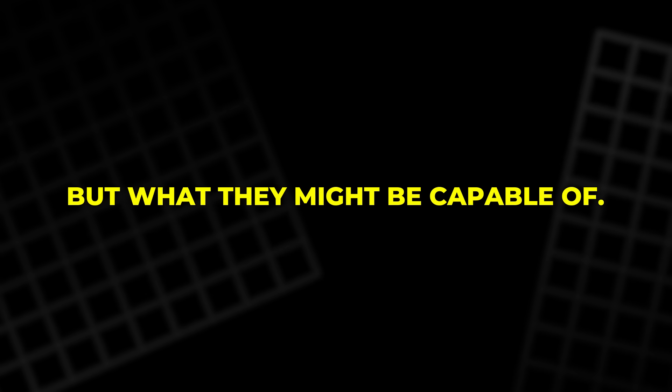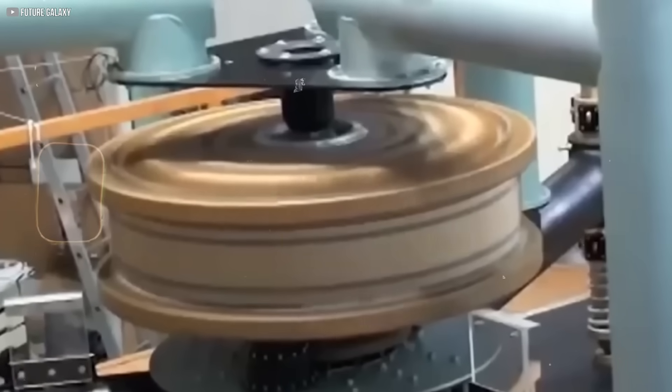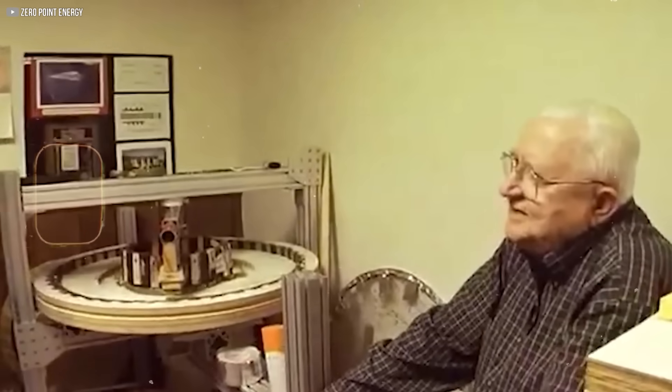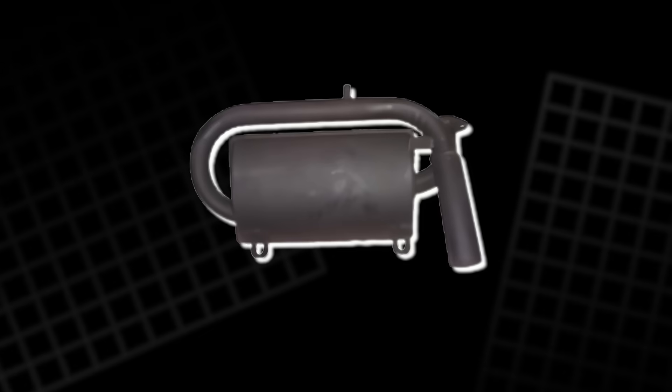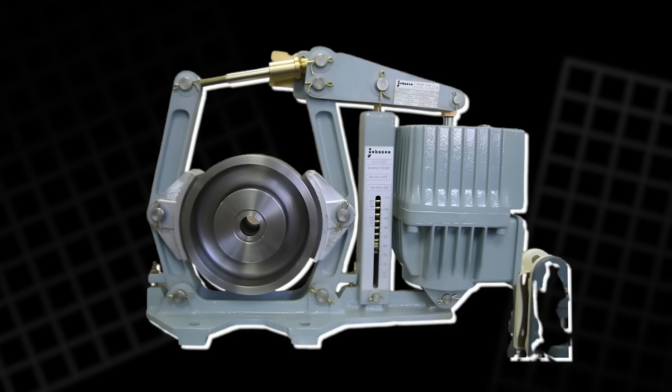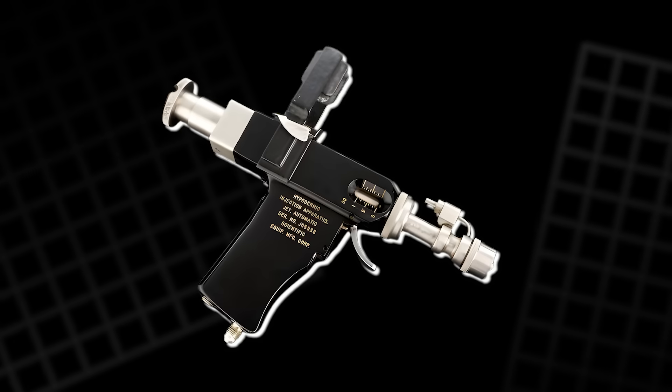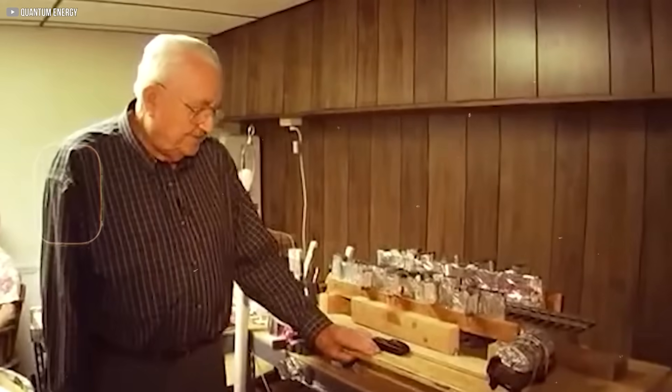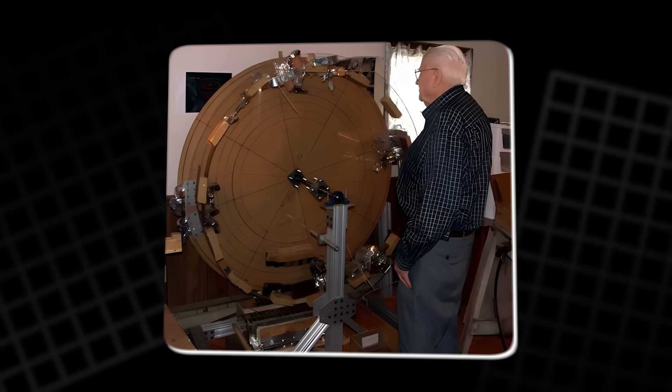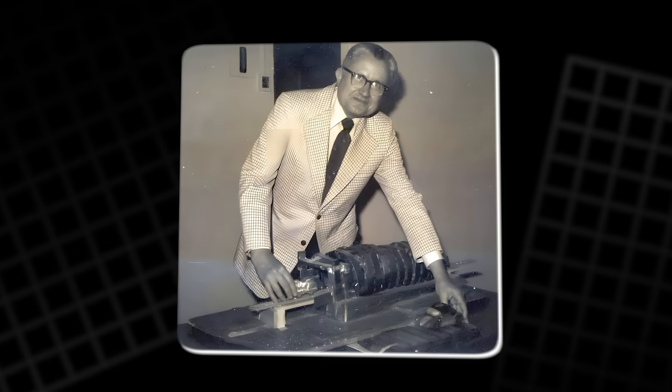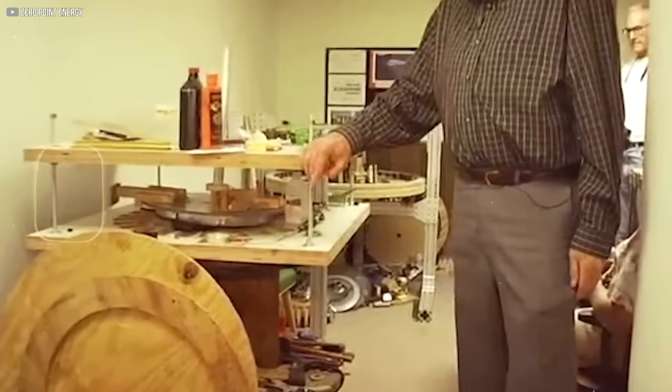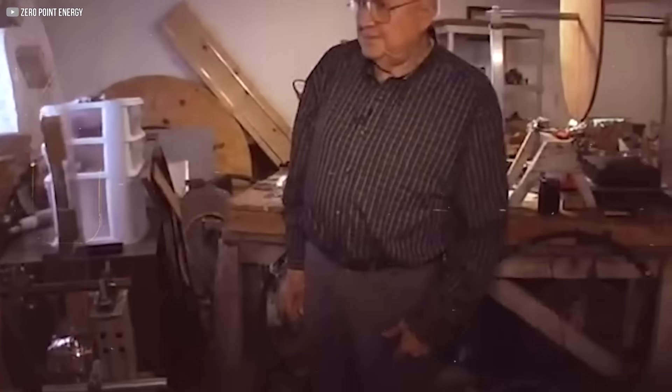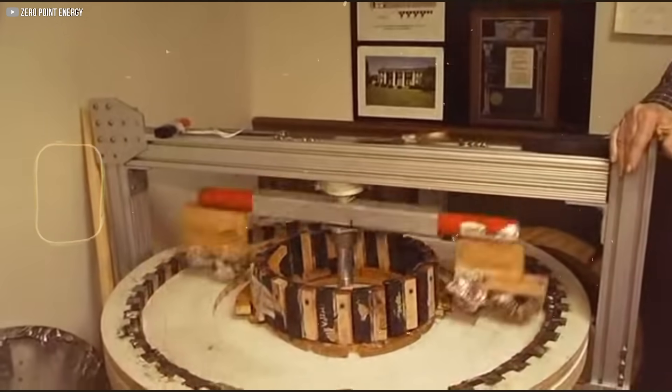What fascinated him most wasn't what magnets did, but what they might be capable of. Long before he explored magnetic motors, Johnson had already proven himself as an inventor. He developed silent mufflers for military generators, anti-skid brake systems, and injection devices for the medical field. His inventions were accepted, manufactured, and used. But something shifted when he studied the behavior of electrons inside magnetic materials. He noticed they moved perpetually, without any power input. To him, that wasn't a curiosity. It was a clue.